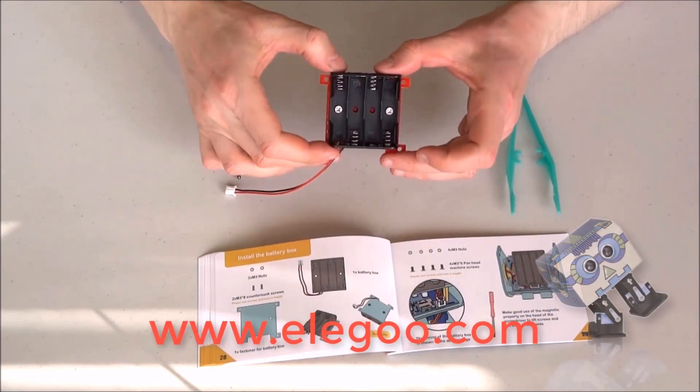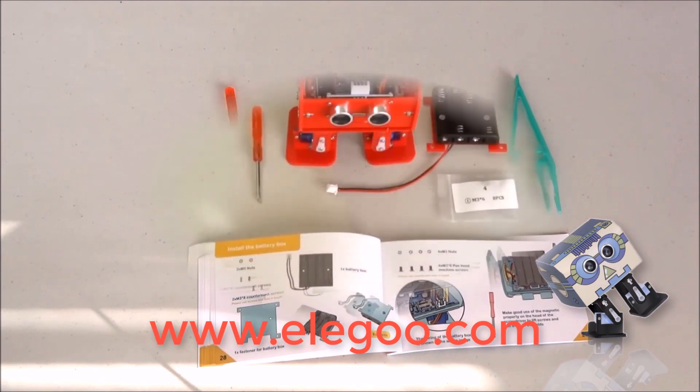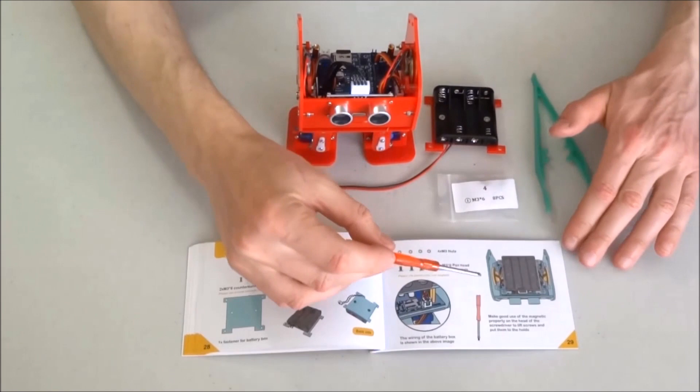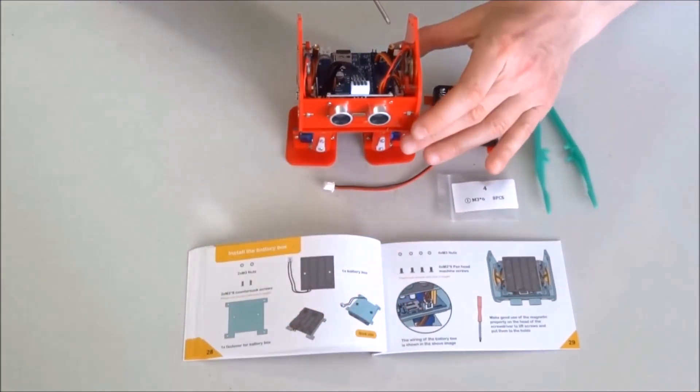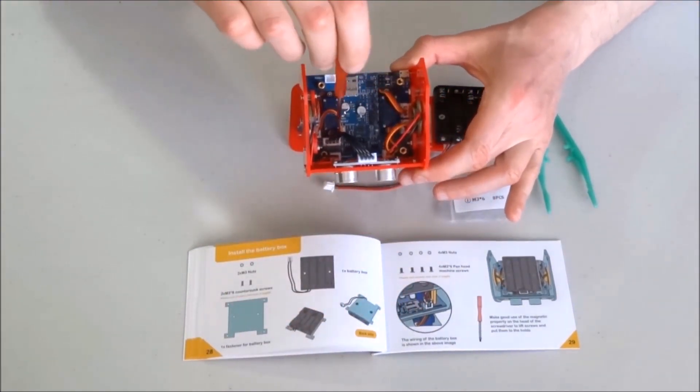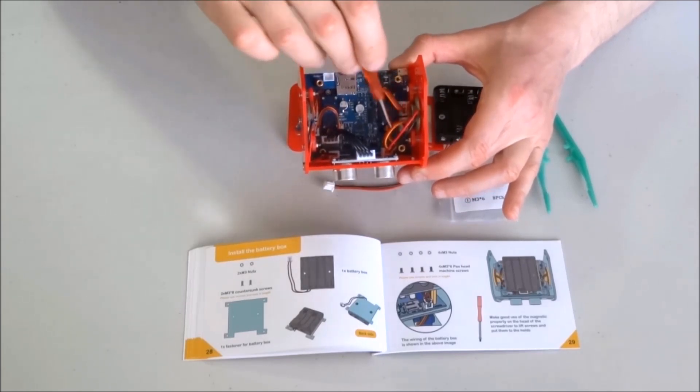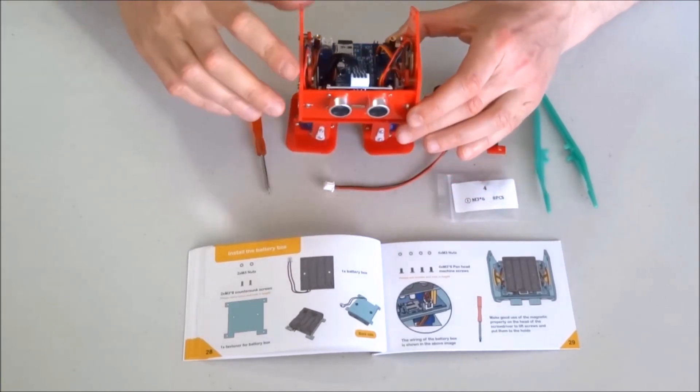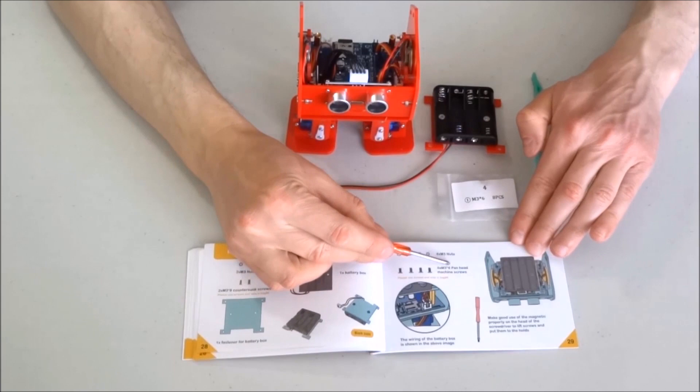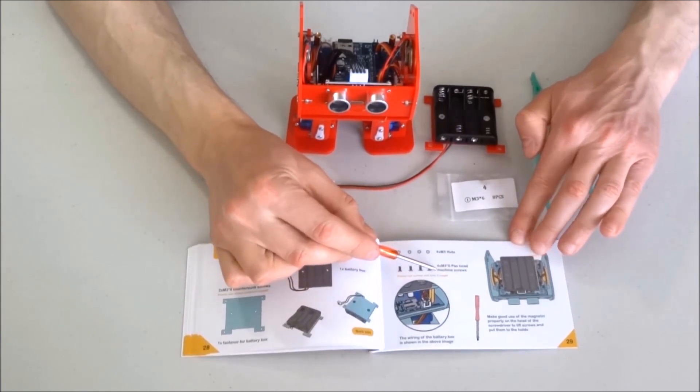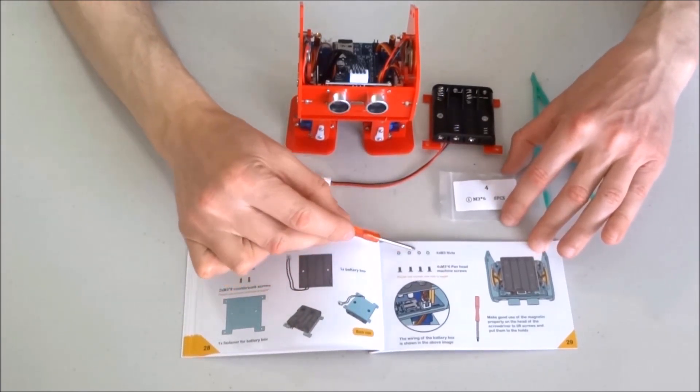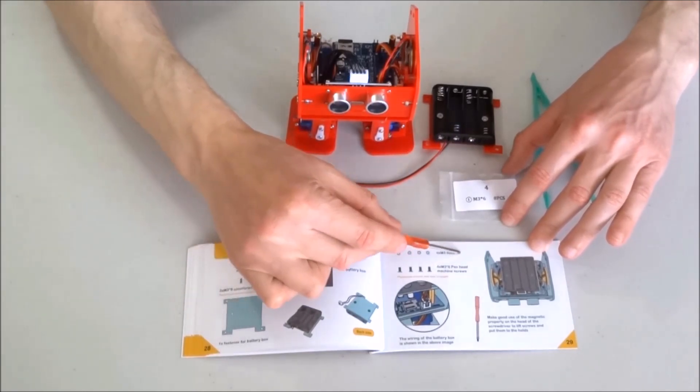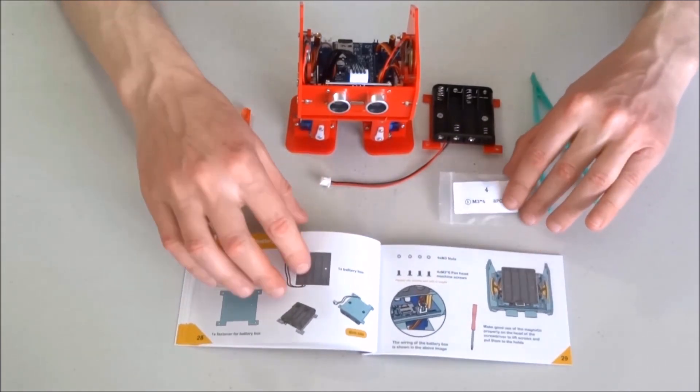The battery box is ready. Now I will install the battery box on top of these four pillars coming from the control board. For this we will use four three by six pan-head machine bolts. Please note that at least in my version of the manual they show nuts, but this step does not require any nuts.